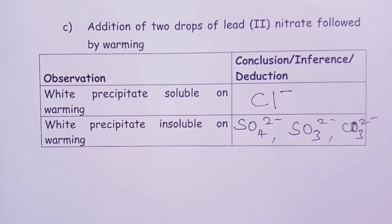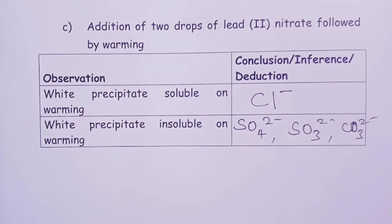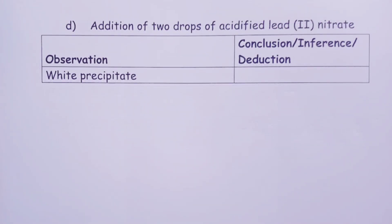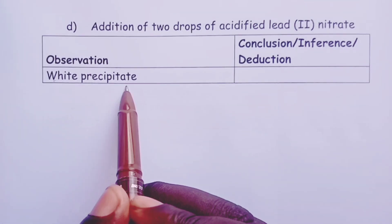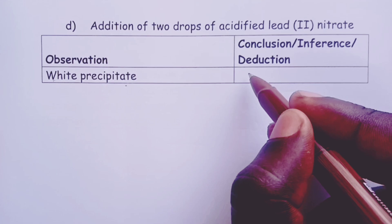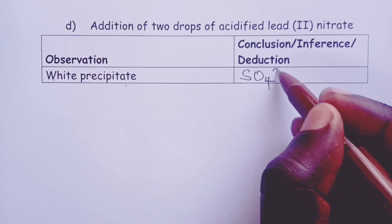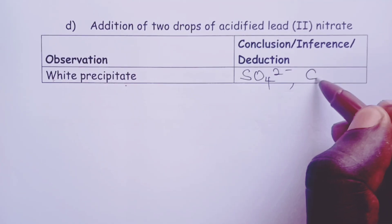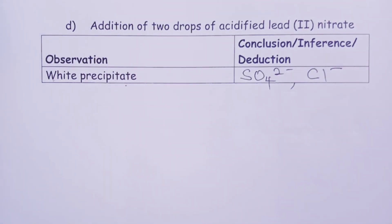For acidified lead-2 nitrate, if the candidate observes a white precipitate, the conclusion is that the unknown solution contains sulfate ions or chloride ions. No white precipitate observed would mean the absence of both. We proceed to the next reagent, which is addition of acidified potassium dichromate-6.